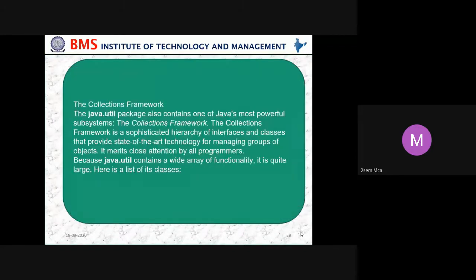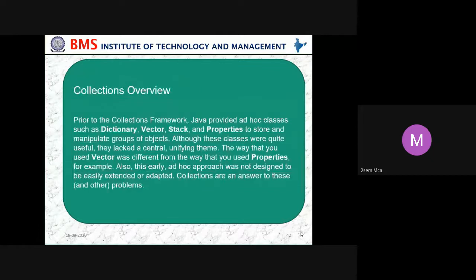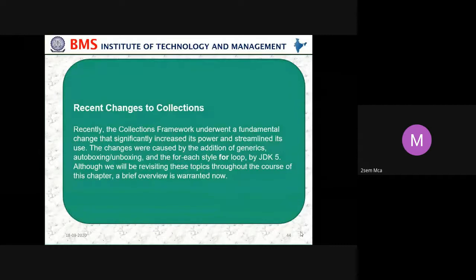Then collection frameworks. These are the different collections and interfaces available. Earlier, on an ad hoc basis, we were using Dictionary, Vector, Stack, and Properties. To replace all of these, we use the Collections framework. In this, a static array is available, but instead of static — where we waste memory — we can go for a dynamic array. We can use linked lists, trees, and hash tables. Recent changes include the added feature of auto-boxing and unboxing.